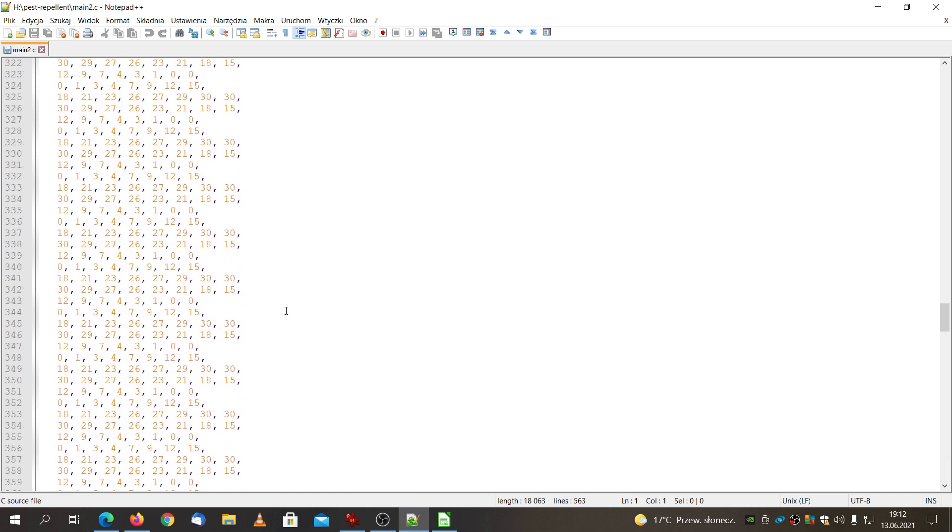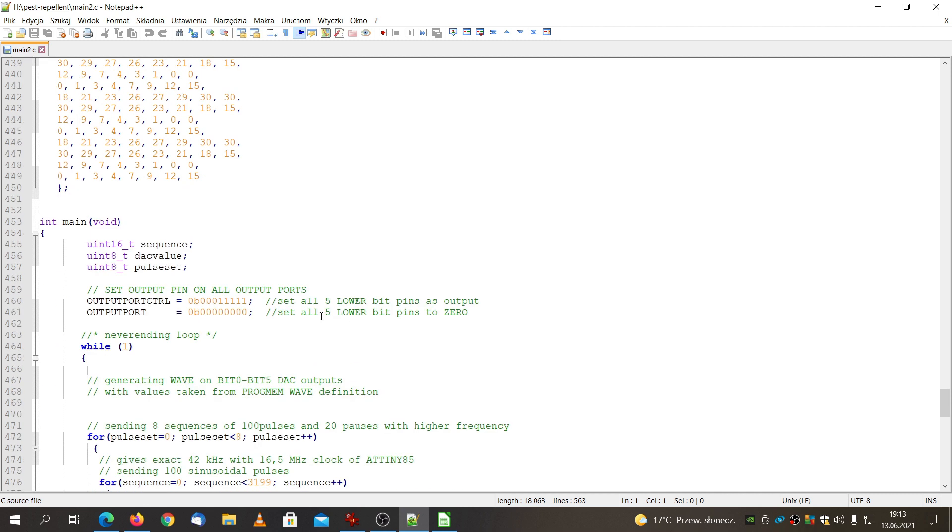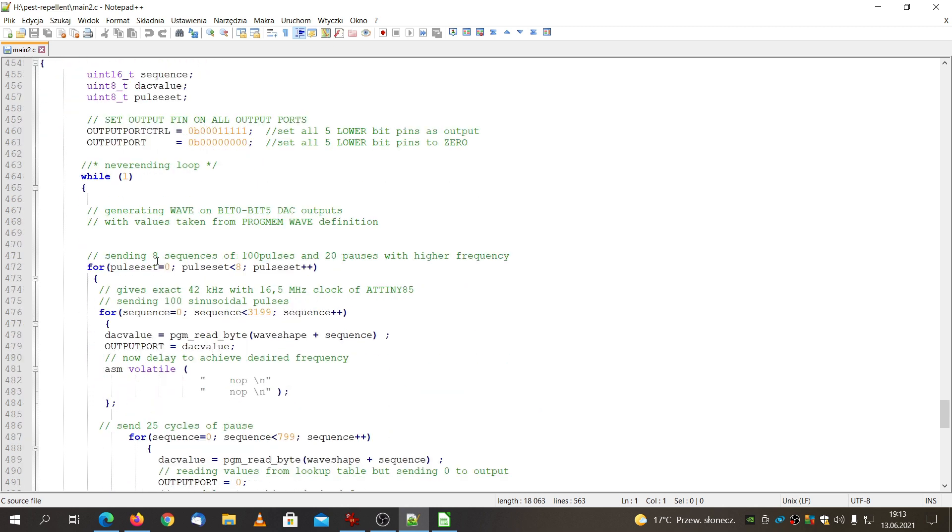As you can see it here, and then I send it from the program memory to the digital-to-analog converter output, which is actually port B of the microcontroller ATtiny85. As you can see, there are some loops that send this data that are read from the memory directly to the output.